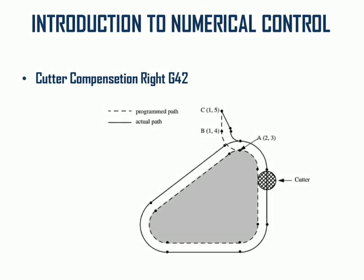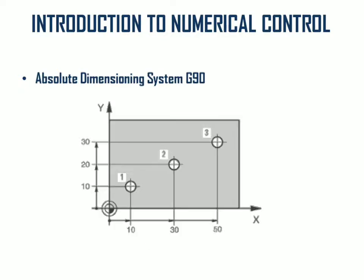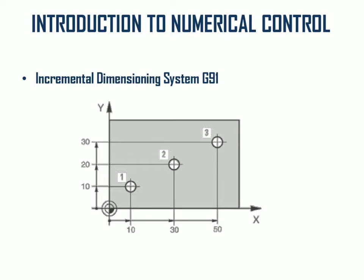The absolute dimensioning system uses G90 code, where every machining operation takes the reference from the origin for each point on the job. The incremental dimensioning system uses G91, where the initial reference is taken from the origin, but for each subsequent operation, the reference is taken from the previous operation point.